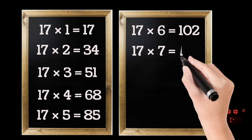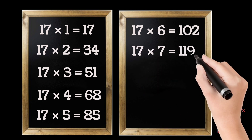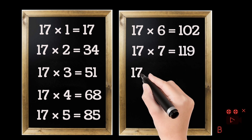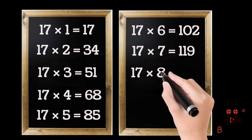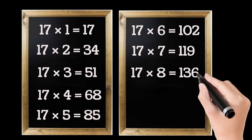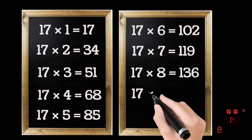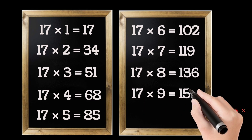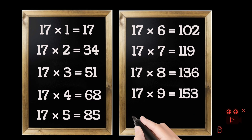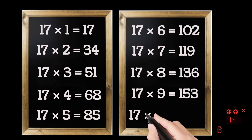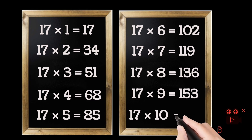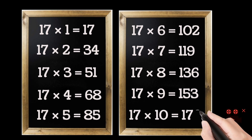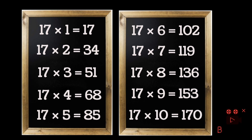17 sevens are 190. 17 eights are 136. 17 nines are 153. 17 tens are 170.